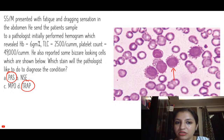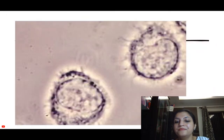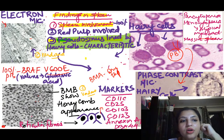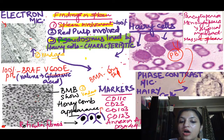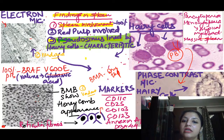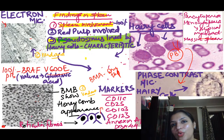These two stains — PAS and acid phosphatase — should be very clear. Apart from that, nowadays instead of special stains we prefer flow cytometry or immunophenotyping for hairy cell leukemia. The markers are typically positive for CD11c, CD25, CD103, CD123, XNA1, and DBA44. These are the markers which can be positive in hairy cell leukemia. That completes the hairy cell leukemia two-question session.